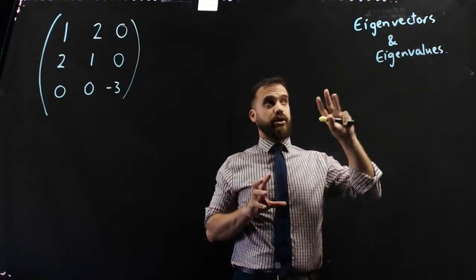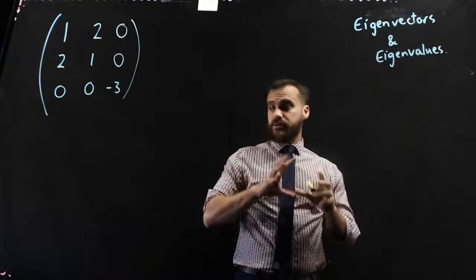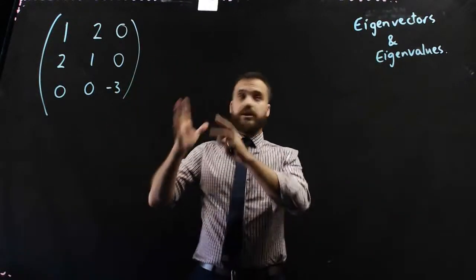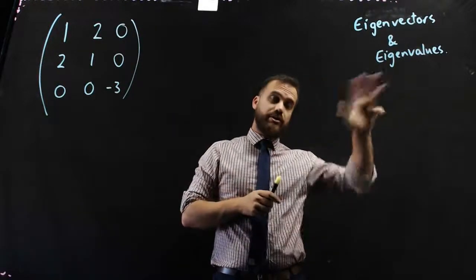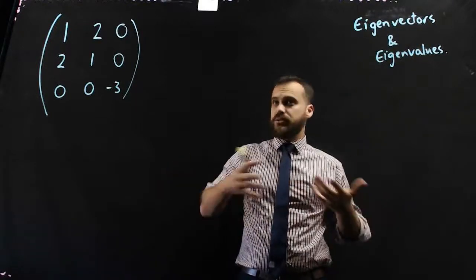All right, so in this video we want to talk about something called eigenvectors and eigenvalues. Now, the best way to do it is to start with a 3 by 3 matrix, and then we're going to write in an eigenvector, we're going to write in an eigenvalue. Now, I'm going to show you how to find them in a future video, but this is really just about what are they, what do they do.